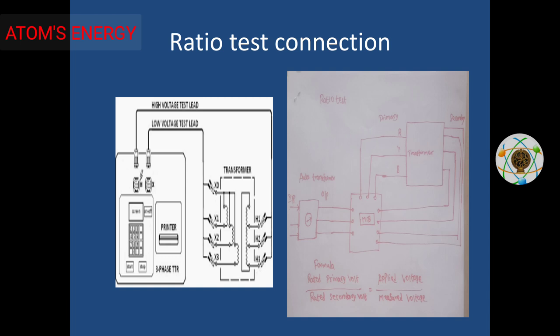Now let's look at the ratio test values and the ratio test connection for this transformer. Primary RYB, secondary RYB to neutral. This is the vector group connection. Now you have an auto transformer — you can use 3-phase supply and 3-phase output. You can use the RYB via an MCB.